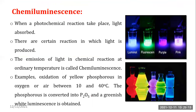Chemiluminescence. In a photochemical reaction, light is absorbed. However, there are certain reactions in which light is produced. The emission of light in a chemical reaction at ordinary temperature is called chemiluminescence. An example is the oxidation of yellow phosphorus in oxygen or air between 10 and 40 degrees Celsius; the phosphorus is converted into P₂O₅ and a greenish-white luminescence is obtained.